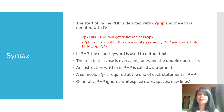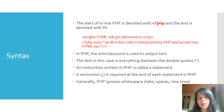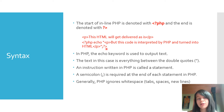Now let's look at the syntax. The start of inline PHP is denoted with an angle bracket, question mark, and PHP. The end is denoted with a question mark and a close angle bracket. Here we have regular HTML markup — just a paragraph tag — which will get delivered as-is. Then we have PHP echo followed by text inside a paragraph tag, closed with a quotation, semicolon, and then the closing PHP tag.